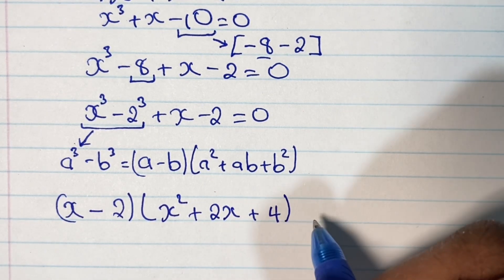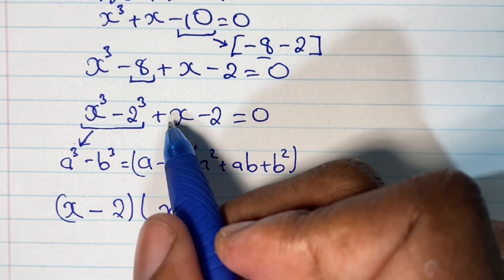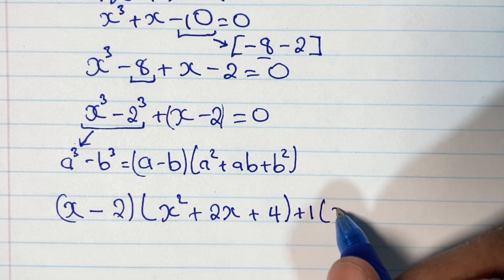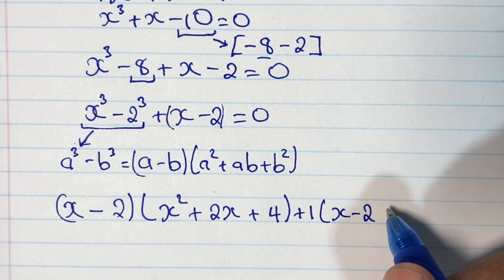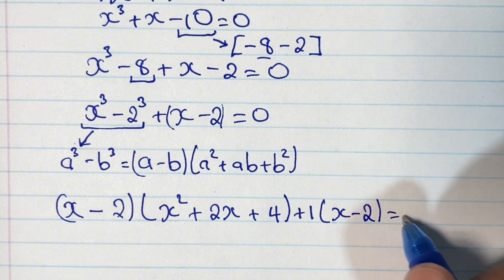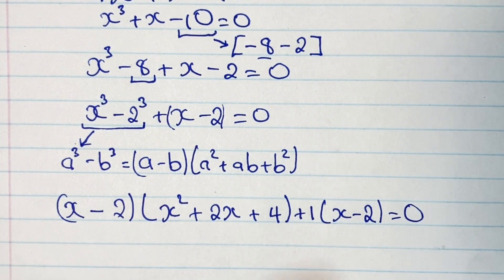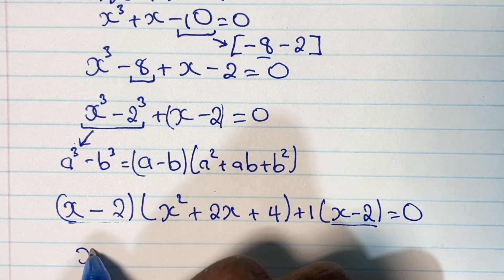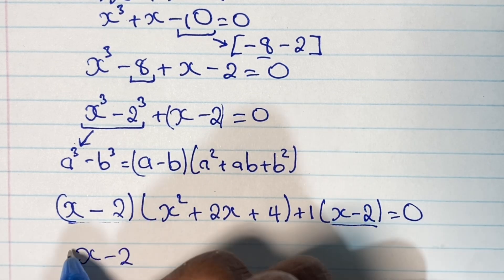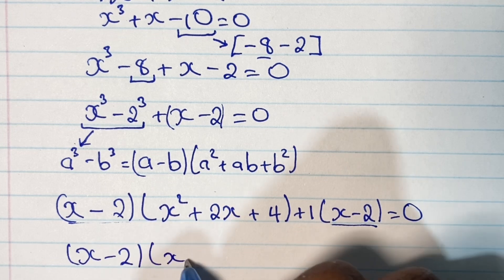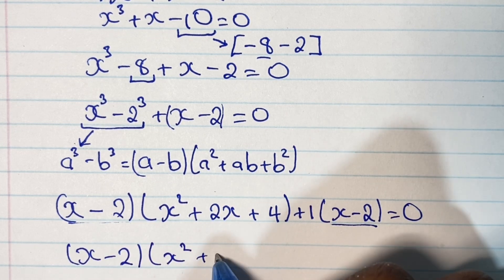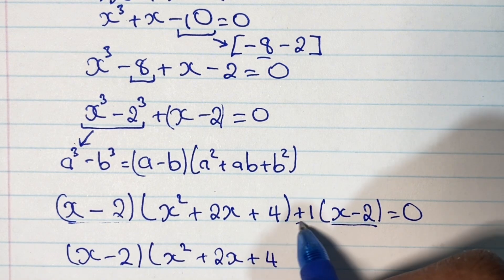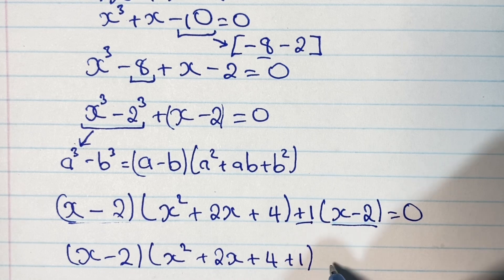For the remaining part, x minus 2, we factor out positive 1, giving us plus 1 times (x minus 2) equals 0. Now we can factor out (x minus 2) from both terms, which gives us (x minus 2) times (x squared plus 2x plus 4 plus 1) equals 0, simplifying to (x minus 2) times (x squared plus 2x plus 5) equals 0.